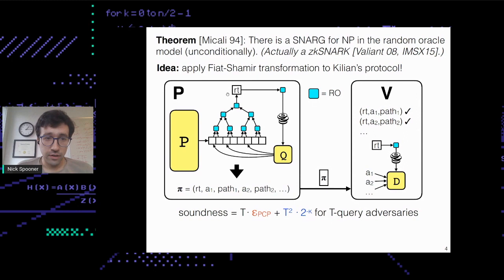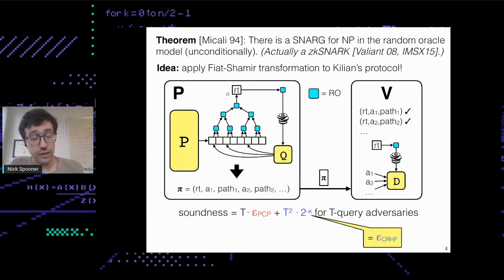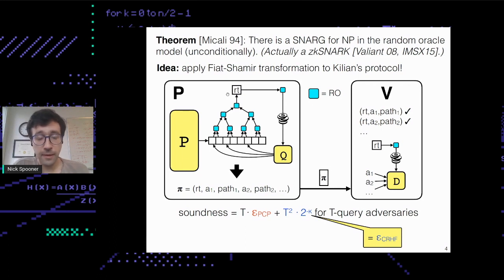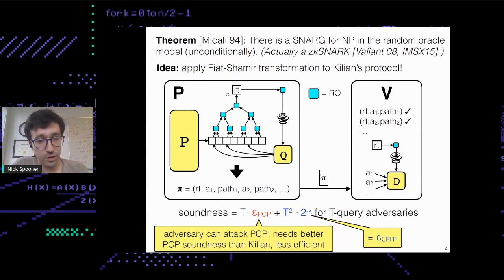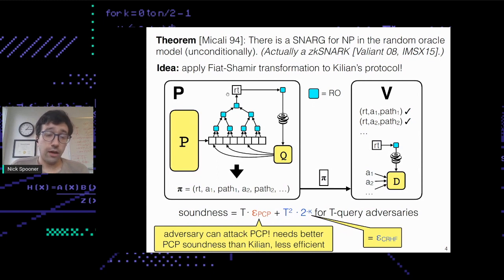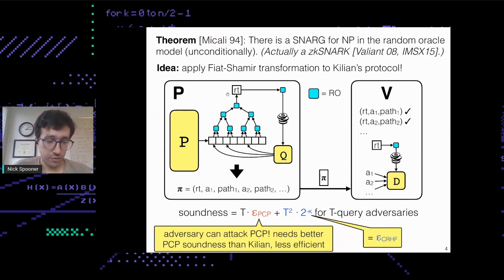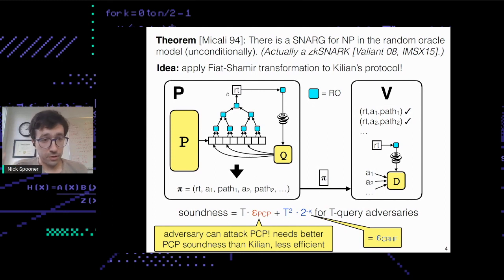What is the soundness in this case? We still have the cost of breaking the collision-resistant hash function. If your adversary is making T queries to the random oracle, you can bound this cost as T²·2^{-kappa}. However, there is a slightly different expression on the PCP side. Before we had just epsilon_PCP — you got one opportunity to attack the PCP. Here, because things are non-interactive, the prover can attack the PCP as many times as he wants. He can try different PCP strings and try to cause the randomness to be a bad choice for that PCP. This corresponds to a factor-T blowup in the soundness error. So to obtain the same soundness as in the interactive setting, you need to improve the soundness of your PCP, which in practice makes the PCP less efficient.